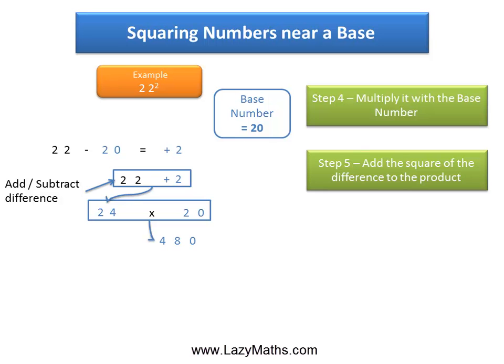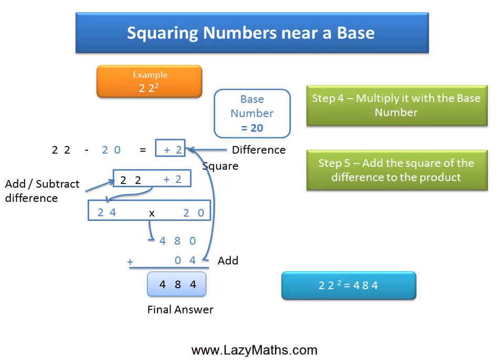The last step is to take the square of the difference, which was positive 2, which is positive 4, and add it to 480. We get 484 as the final answer. So 22 squared equals 484. And that's it. Thank you.